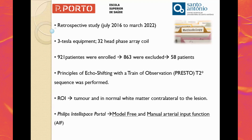We studied 58 patients with GBM who had undergone therapy and presented alterations suggestive of tumoral progression or pseudo-progression, in which the PRESTO sequence was performed. For each patient, a ROI was delineated in the hot spot of the tumor